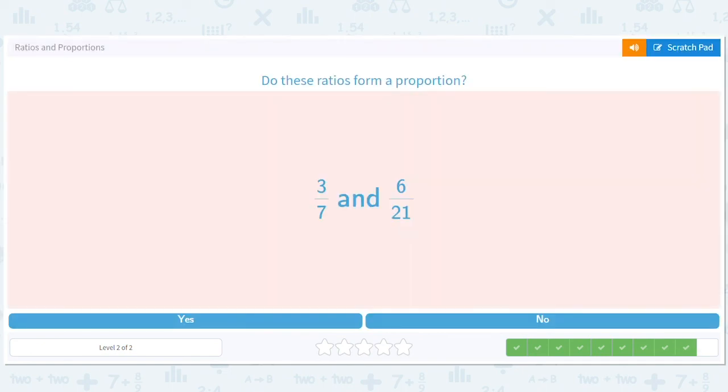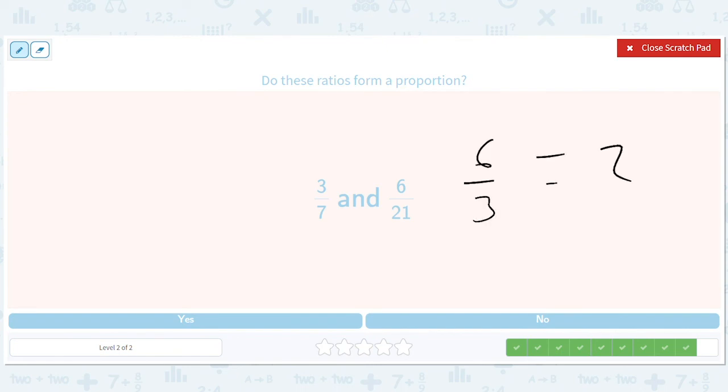All right. How about this? Six divided by three is two. Twenty-one divided by seven is three. These are not the same. So the answer is no.